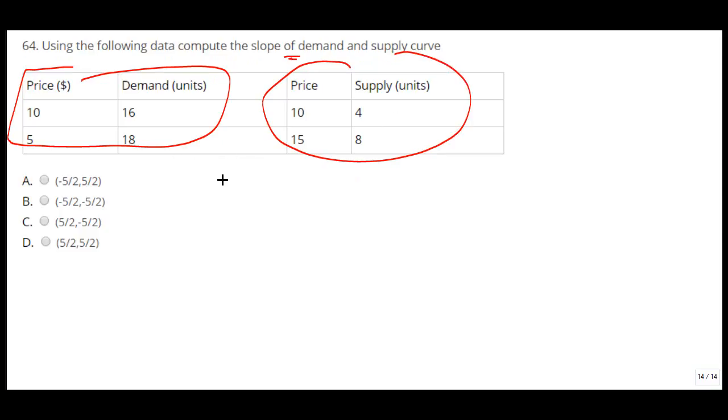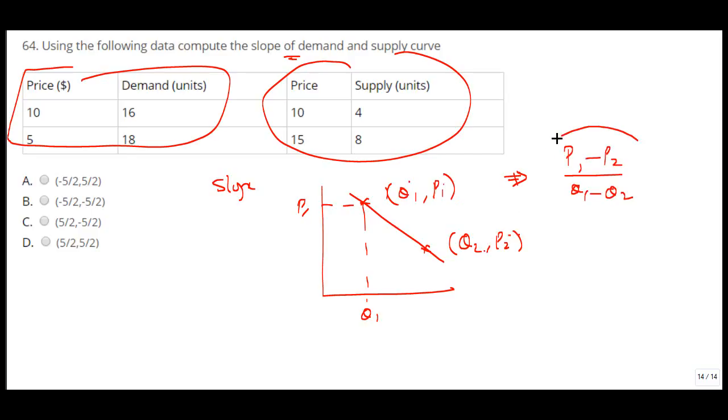So the slope of any line, if you see, let us say we have this is the demand curve. So how do we get the slope of any line? We need to know two points. So this is one point we can say this is your q1 and this is p1. So we can say that q1 p1 is one point and then you have q2 p2 is another point. So the slope is given as we can say y2 minus y1 divided by x2 minus x1. So we can say p1 minus p2 divided by q1 minus q2.